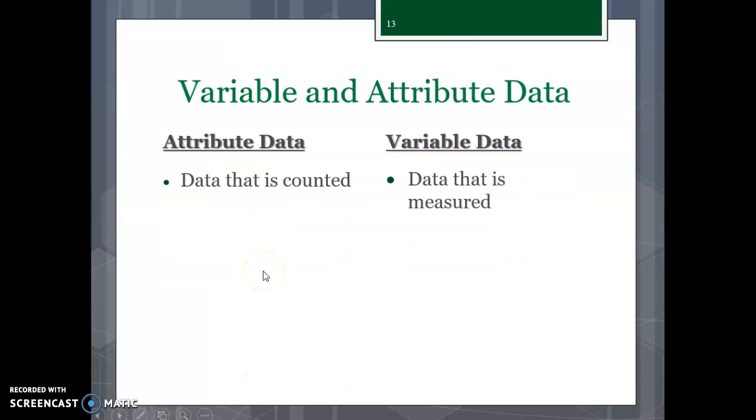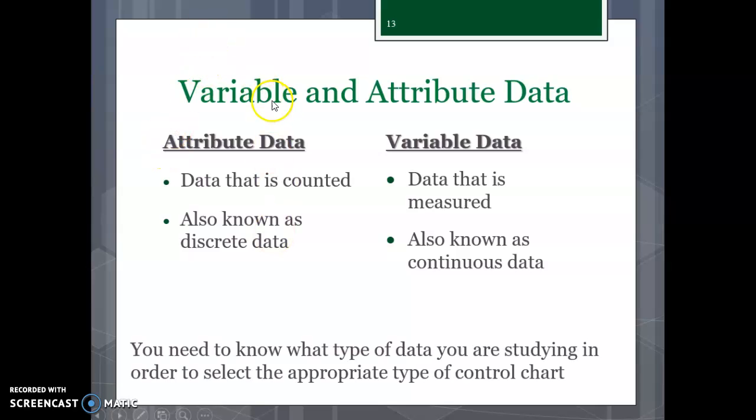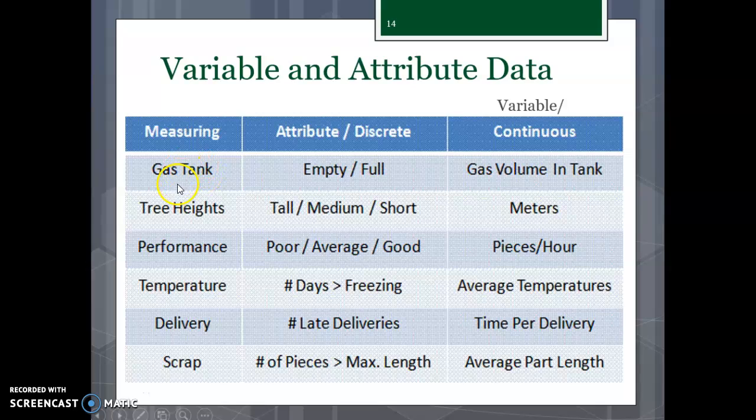Now we're going to talk about the data that you're actually going to collect. You're going to have variable data or attribute data. So attribute data is like data that is counted or discrete data. Like you can pick a certain attribute, say, how many people of your friends have like blue eyes. And then you can count that, and that's your attribute that you're doing. Variable data is measure data, and we're going to look at the next slide. I'll show you a little bit about that. Let's talk about these here.